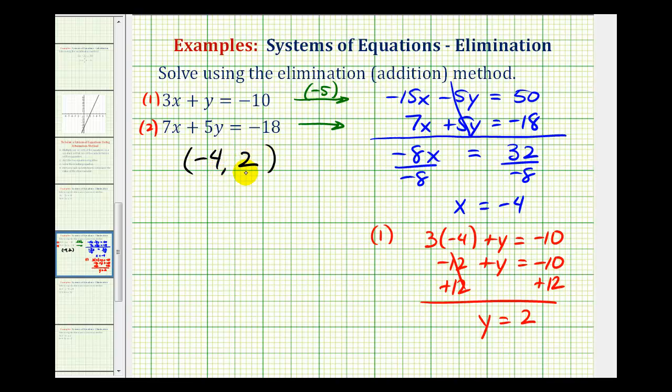And since we have one unique solution, we can say the system is consistent because it has at least one solution and the equations are independent because they are different.